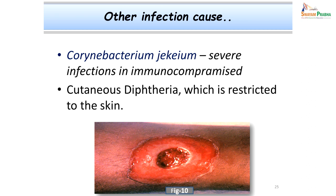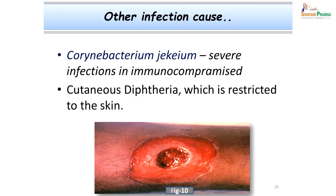Corynebacterium diphtheriae can also produce a milder disease — cutaneous diphtheria — which is restricted to the skin, producing typical chronic ulcers. Another important species of Corynebacterium in recent times is Corynebacterium ulcerans. This organism can cause severe infections in immunocompromised patients, and it has taken the upper hand after the AIDS pandemic. It can also produce septicemia and fatal infections in immunocompromised patients.